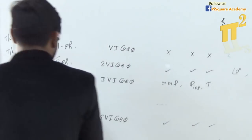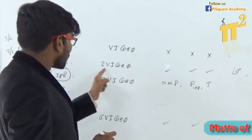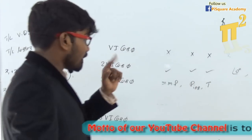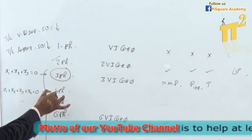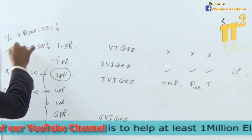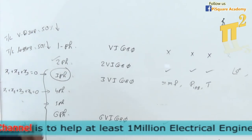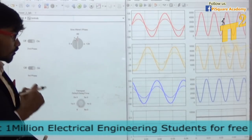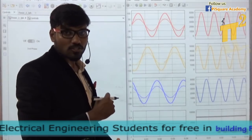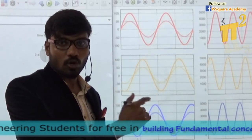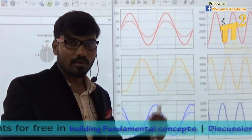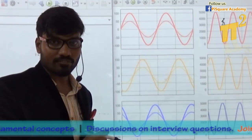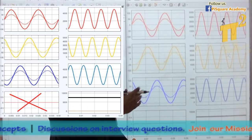Now let's look at these things in detail. Number 1: in case of 2-phase also, I said power is constant — we will look at that. Number 2: in case of 3, 4, 5, 6 phases, transmission line losses and voltage drop are reduced by 50% — we will look at how that happens. I am not giving mathematical derivations; I am showing this through MATLAB simulation.